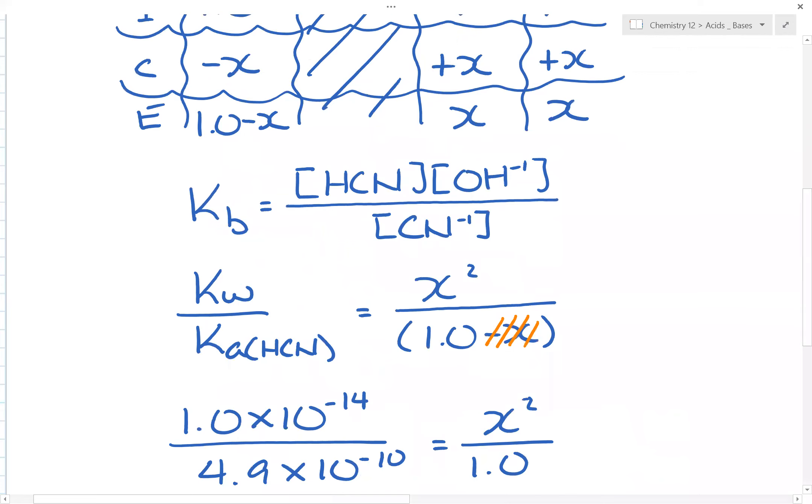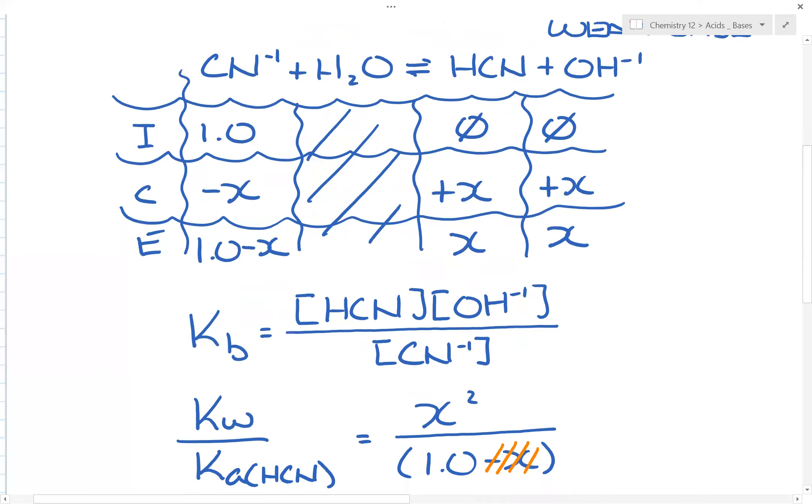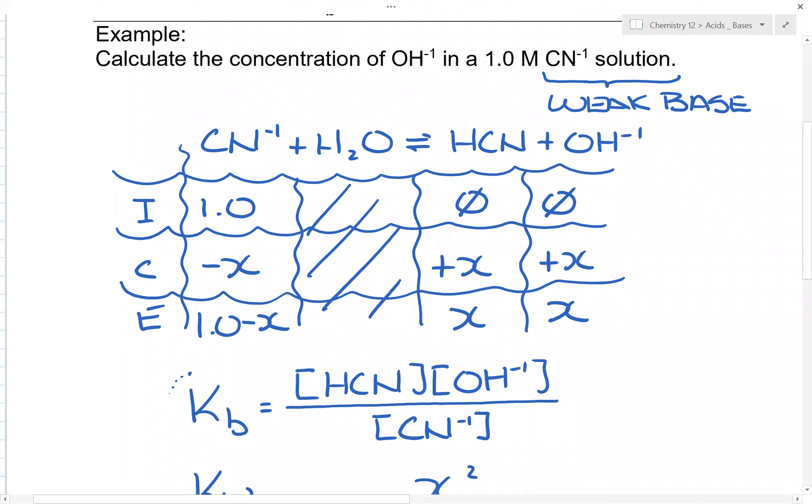So in this particular question, all you need to do is recognize that CN minus 1, and because CN minus 1 is a weak base, you recognize that you have to focus on Kb.